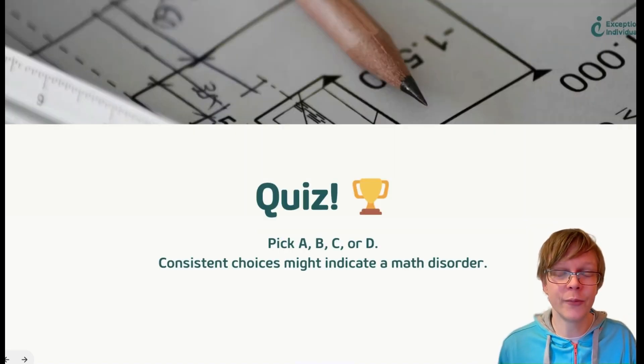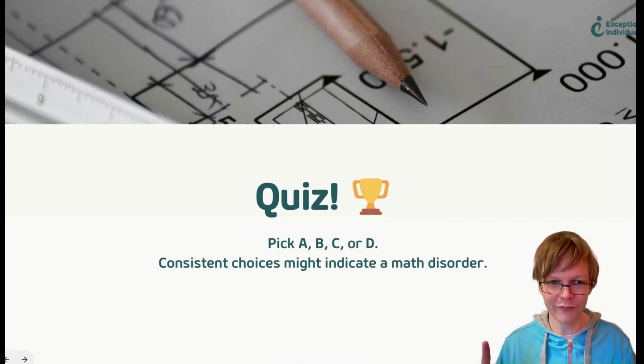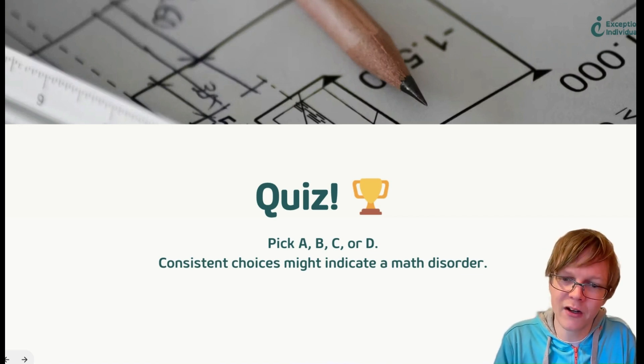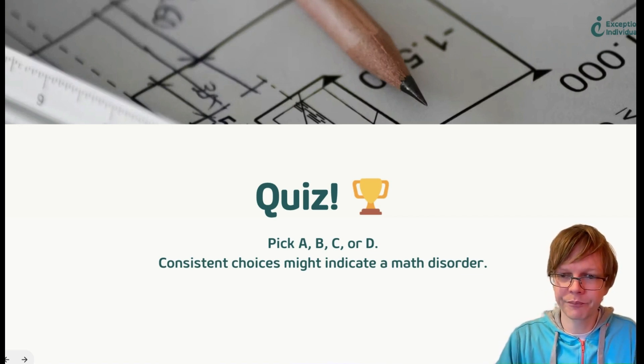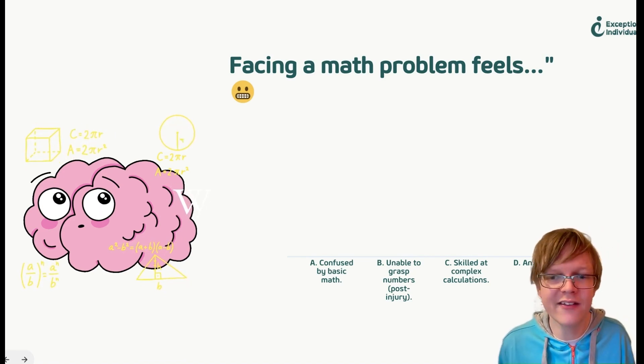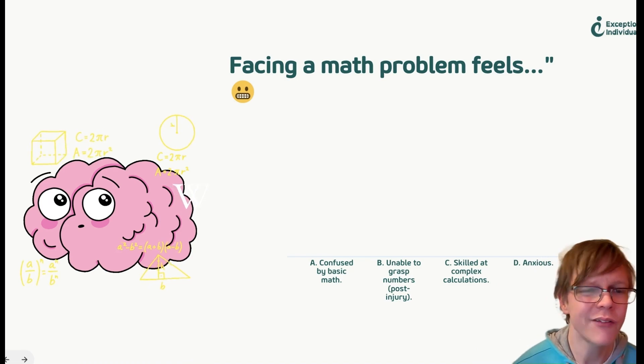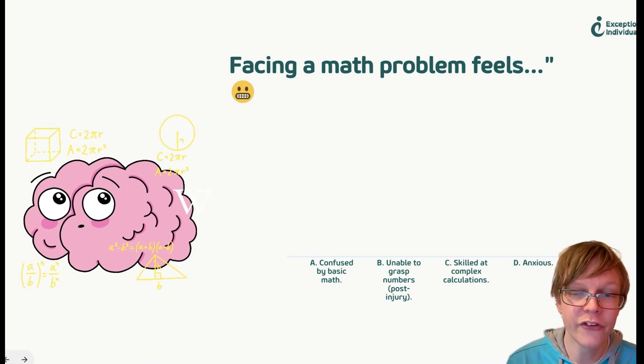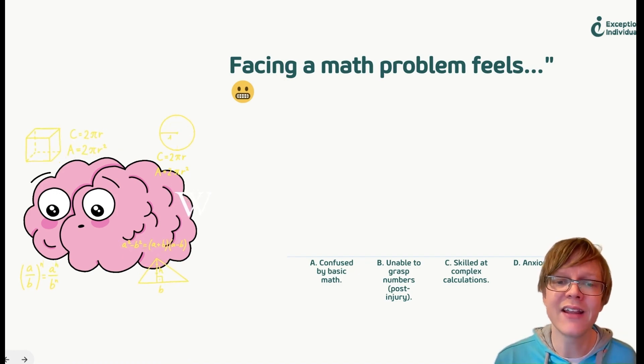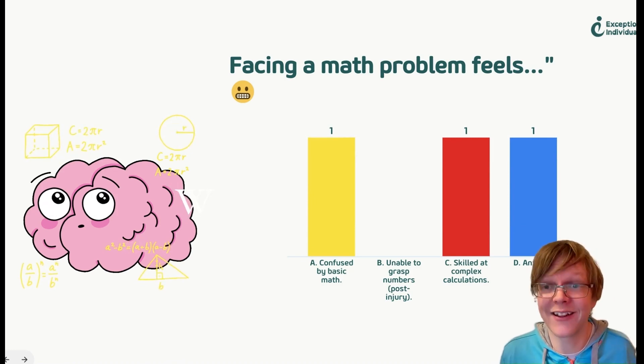Here's a quick quiz. As you're answering these, make either mental or a physical note on which answer you're picking. At the end, we're going to see which of these conditions you most align with. Of course, this is just a bit of fun, but I think it's a fun way to learn about these conditions. The first question is, facing a maths problem feels like: confused by basic maths, unable to grasp numbers after an injury, skilled at complex calculations, or crippling anxiety.